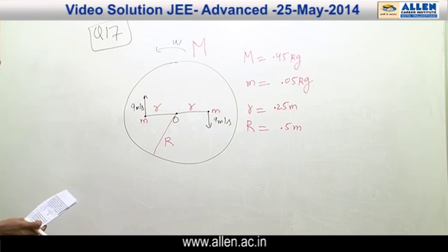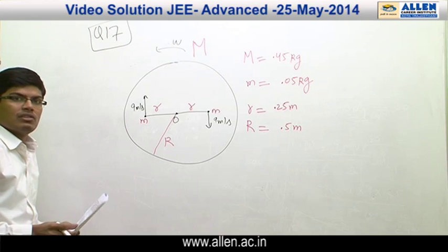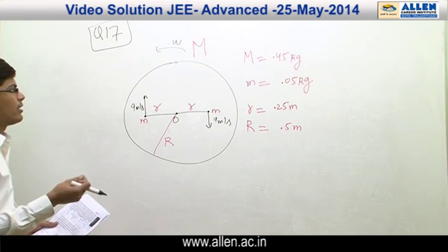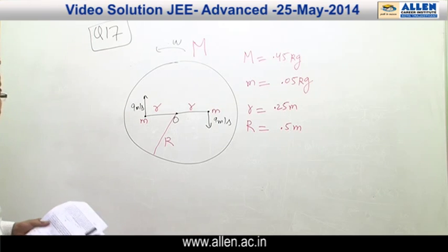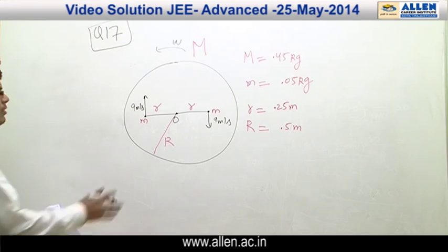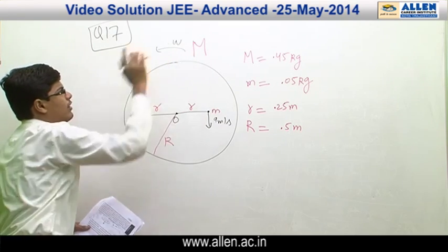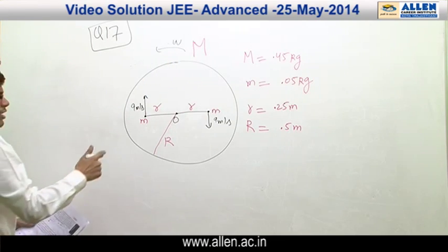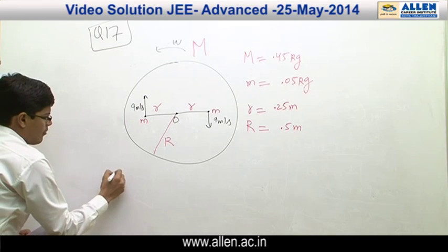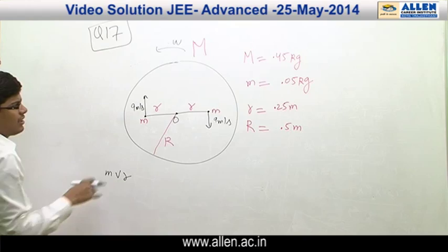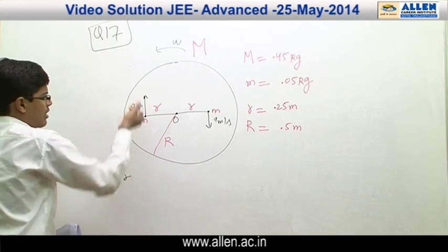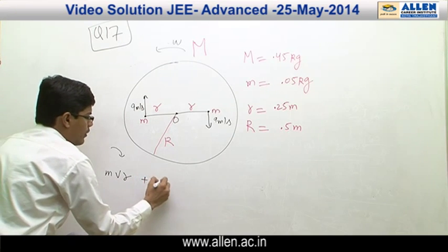There is no external torque, so the angular momentum of the system is conserved. Initially the system was at rest, so the final angular momentum will also be zero. Writing the final angular momentum, we have three terms: two steel balls and the circular table. The angular momentum of each steel ball is M·V·r, both in the clockwise sense.